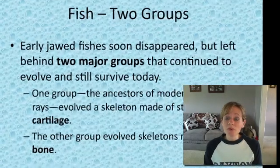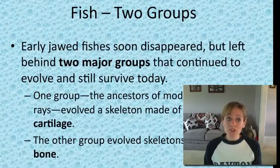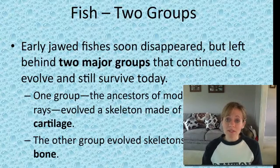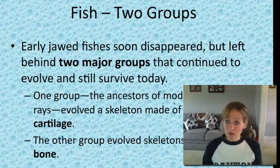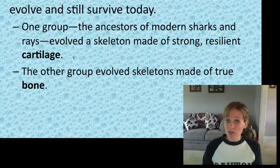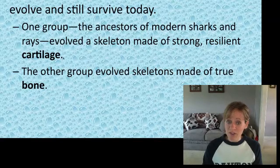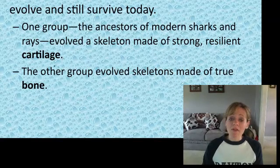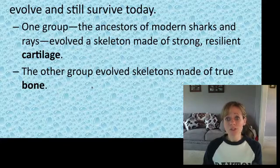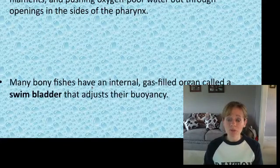Early on, fish evolved into two major groups. One group is the ancestors of modern sharks, and their skeletons were made out of cartilage. The other group had a skeleton made out of bone. We'll take a closer look at those two groups in a moment.